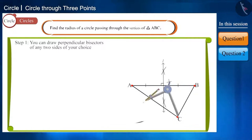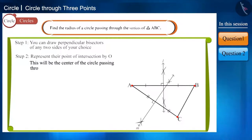You can draw perpendicular bisectors of any two sides of your choice. Their point of intersection will be the center of the circle passing through the vertex points of this triangle.